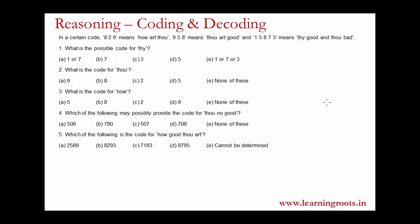So we will see this question. The certain code states that 829 corresponds to 'how art thou', 958 corresponds to 'thou art good', and 15873 means 'thy good and thou art'. Note that some archaic English words are used — this is probably to drive people away from the question. The central idea when solving is that you should understand where the overlap lies.